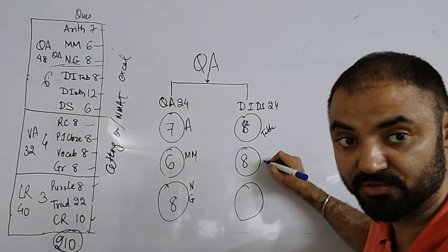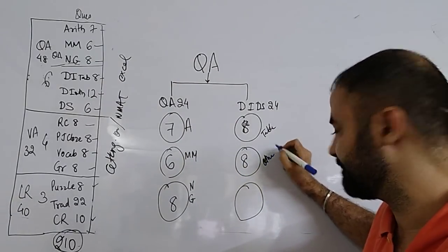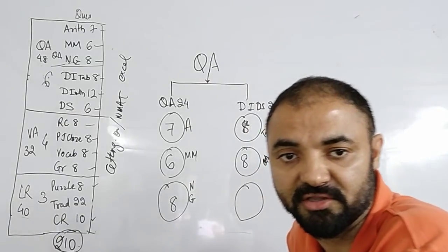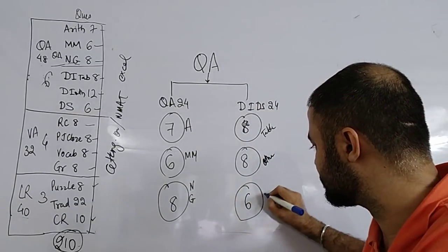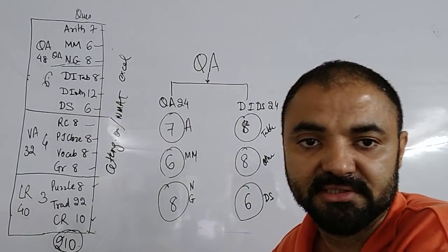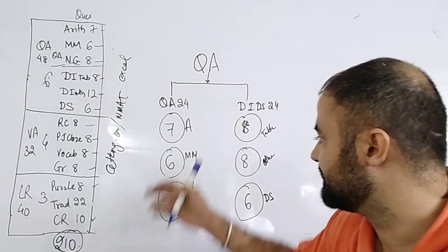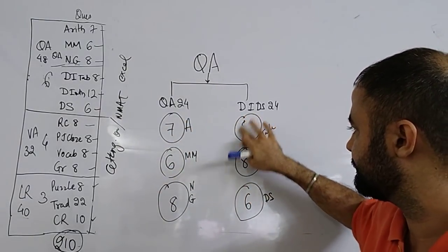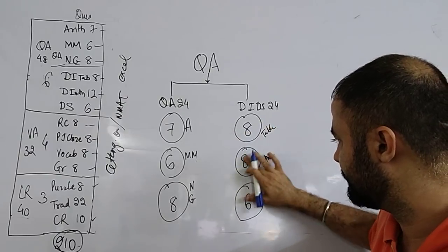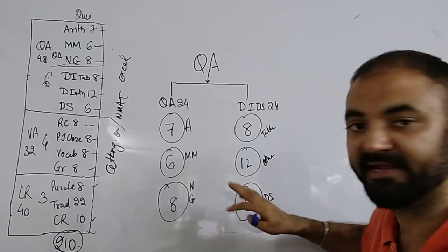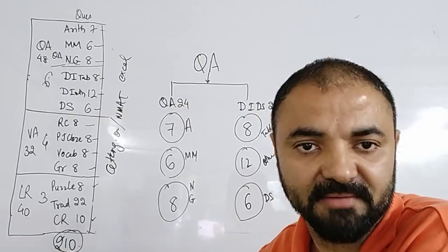Another 8 to 10 questions may be based on other DI—pie chart, bar chart, line chart, all the graphs—and 6 questions on data sufficiency. This is a rough breakup of your NMAT paper. So it can be 12-8, or this can be 12 and this can be 8. This is a rough breakup—6 parts in short.